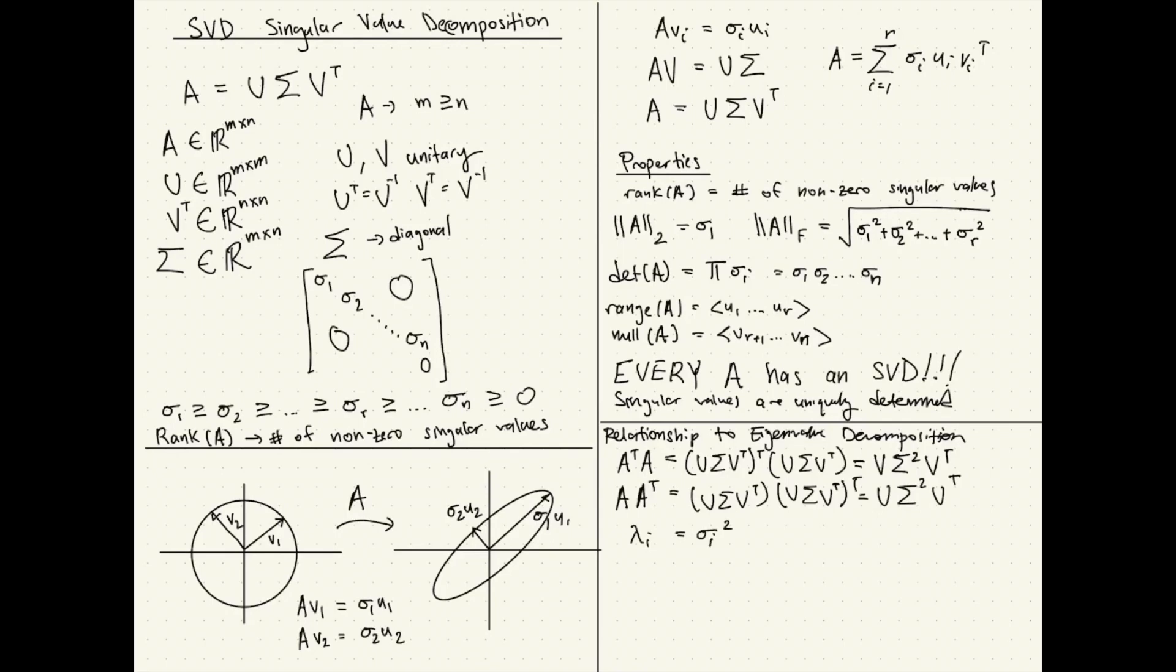Very, very cool conclusion. That's awesome. The eigenvectors of A transpose A are in the matrix V. The eigenvectors of A A transpose are in the matrix U, and that's pretty sweet.